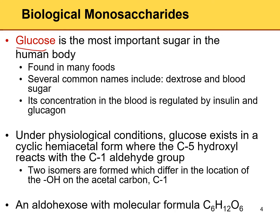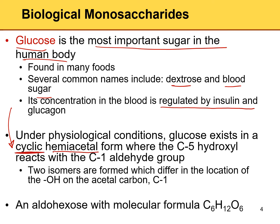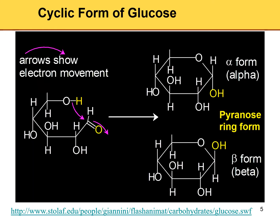Glucose is very important — it's found in many foods, also called dextrose or blood sugar, and its concentration in the body is regulated by insulin. Under physiological conditions, glucose exists in a cyclic hemiacetal form where the C5 hydroxyl reacts with the C1 aldehyde.